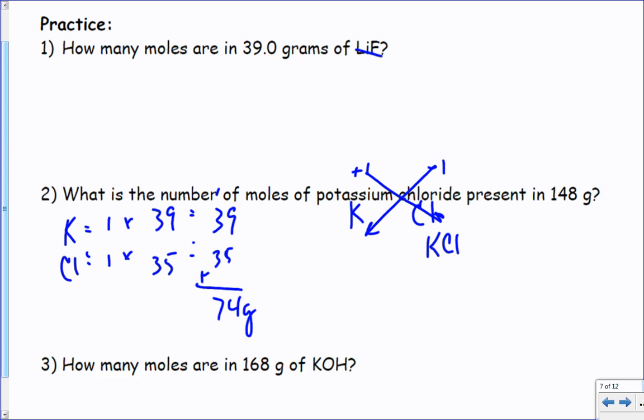39 plus 35, if I do that out, I got 74 grams in one mole. It gives me 148 grams. If I have 148 grams of the stuff on the balance and I calculated that 74 grams is one mole, do I have more than one mole or less than one mole? That tells me the bigger number goes on top.